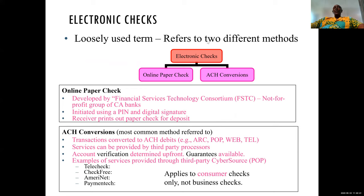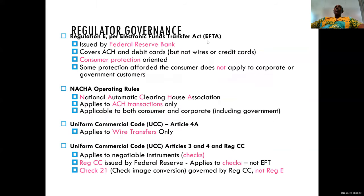The other things on the slide talk about other forms of electronic transfers — we have electronic checks, which include online paper checks and at-conventions. These are not required for our purposes and therefore we don't need to look at them in detail.